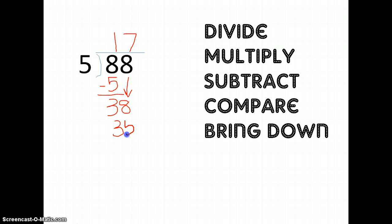So I just multiplied, so now I'm ready to subtract. 38 minus 35 is 3. Now I compare. Is 3 smaller than 5? Yes, 3 is smaller than 5. I don't have anything left to bring down, so this is just my remainder. So my answer is 17 remainder 3.